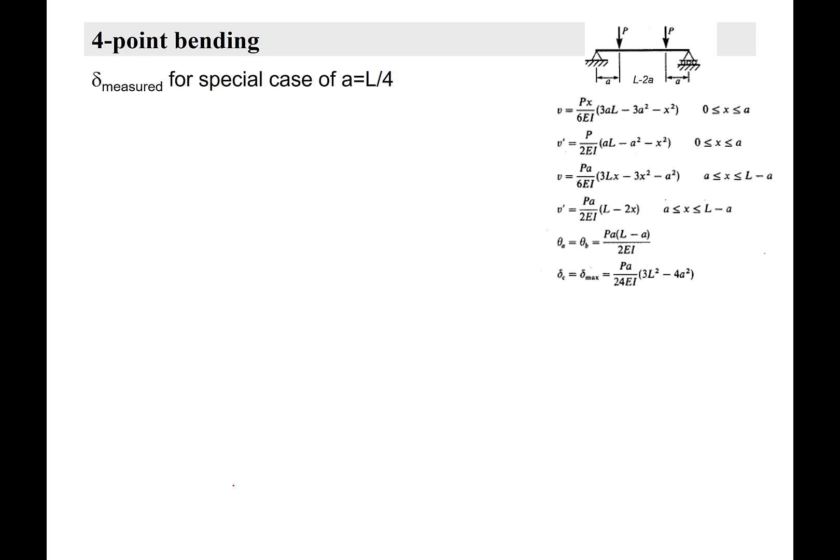Now for the special case of a equals L over 4, or that the span equals half of L, or on the Instron software this would be called the span ratio which in this case would be 2. Again this is the span, the load span, and this L is the support span. So for this special case we can also calculate the measured displacement as we did on the last slide. Here we put in a equals L over 4 because S is equal to half L and then you have a plus a.